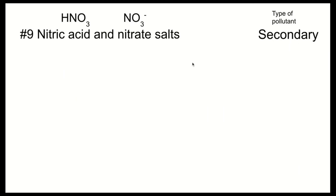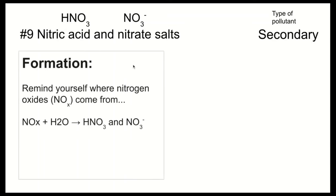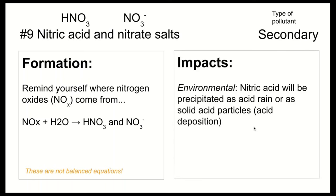The next set of secondary pollutants are nitrogen-containing molecules: nitric acid (HNO3) and nitrate salts (NO3−). They form when nitrogen oxides combine with water vapor in the atmosphere. The main impact is acid rain: nitric acid is precipitated as acid rain or as dry acid deposition particles.